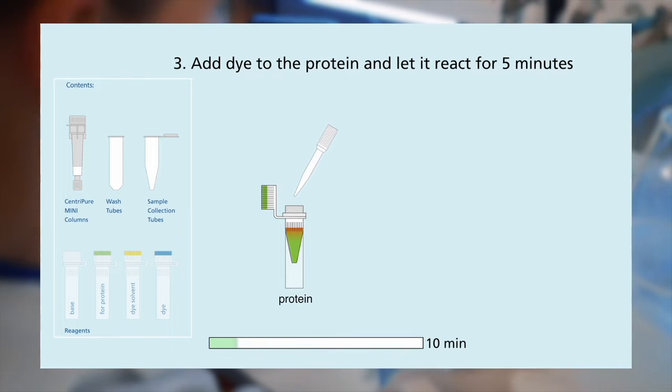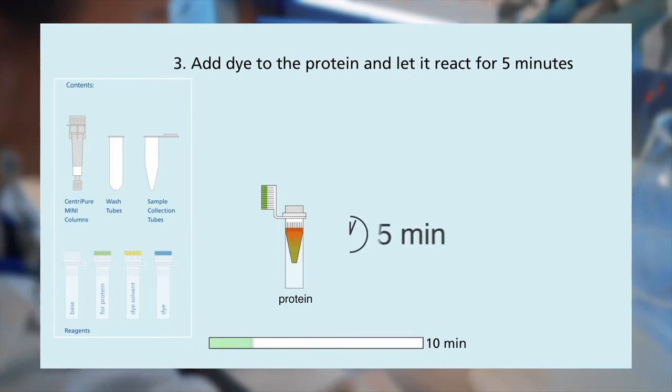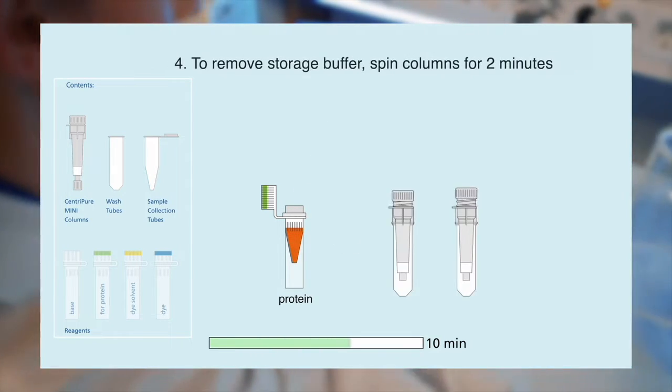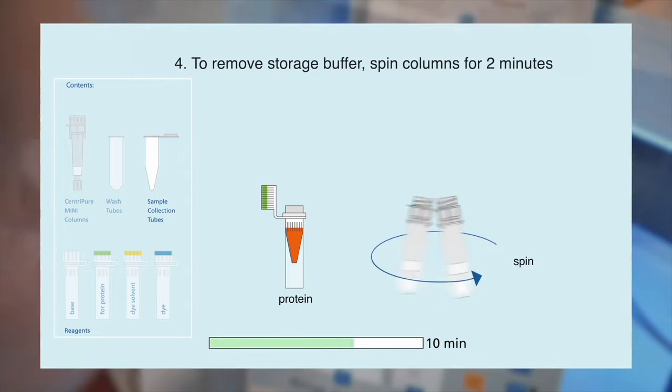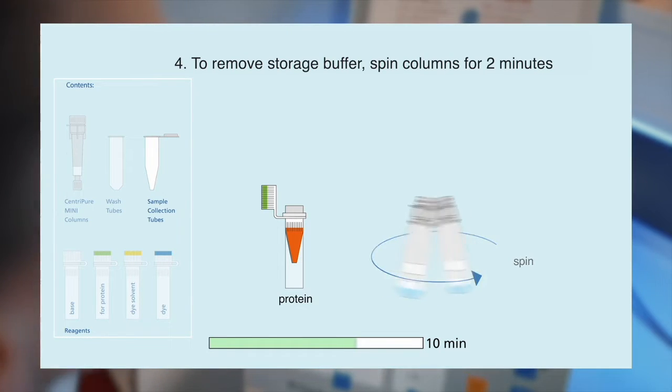We take this time to prepare for the purification step. We first remove storage buffer from the mini columns by spinning for two minutes.